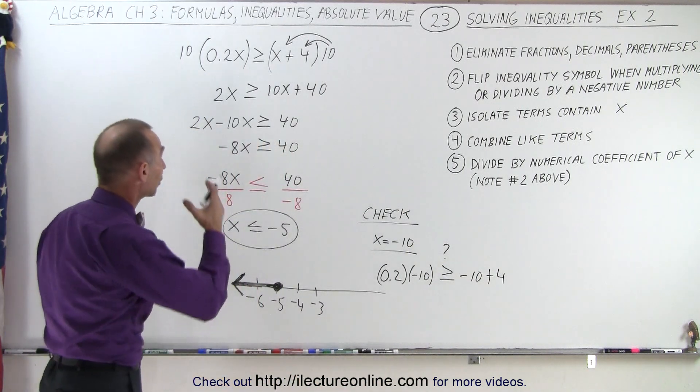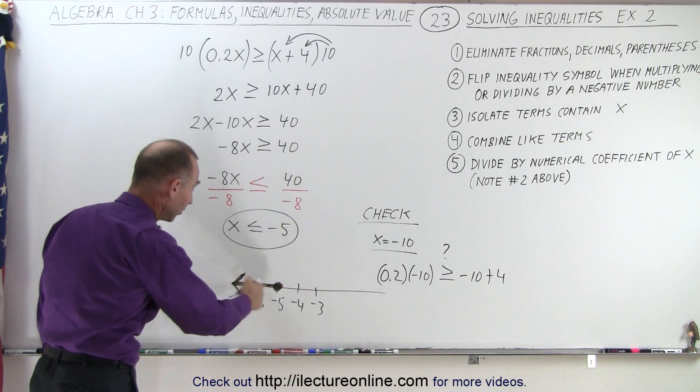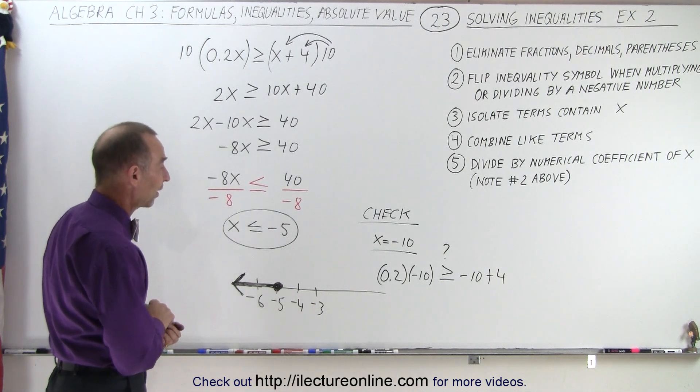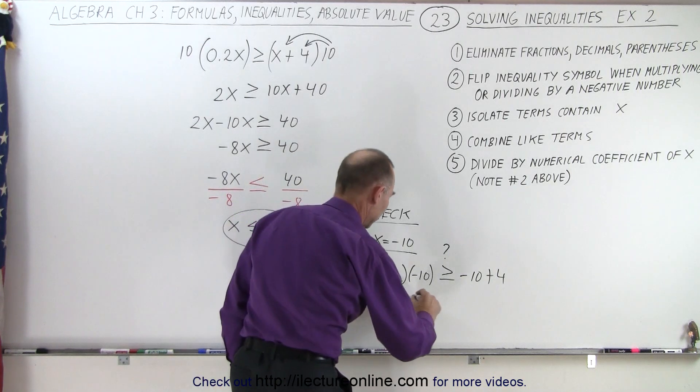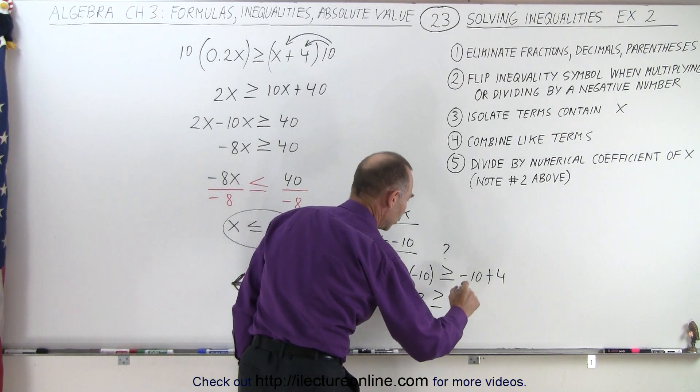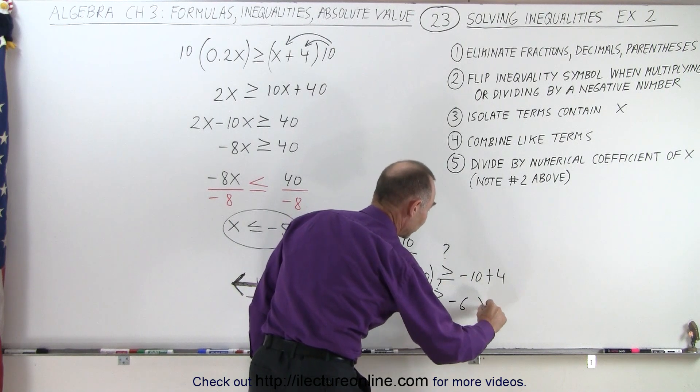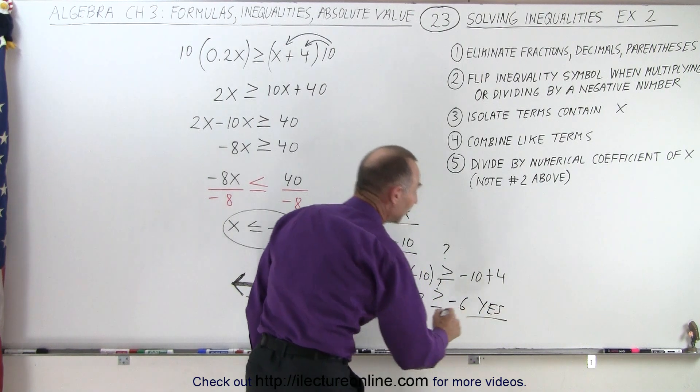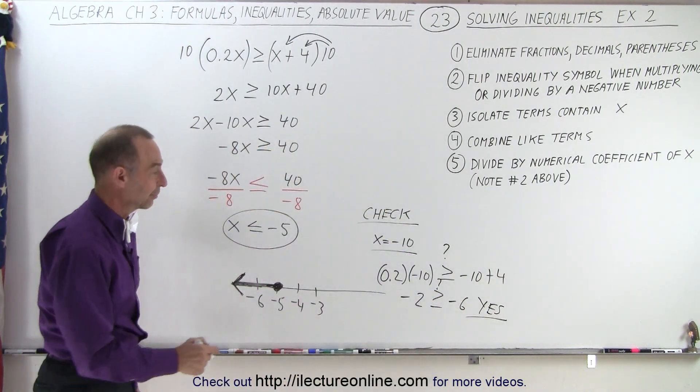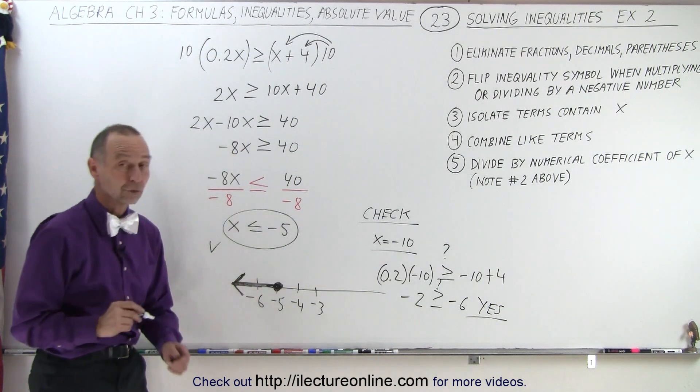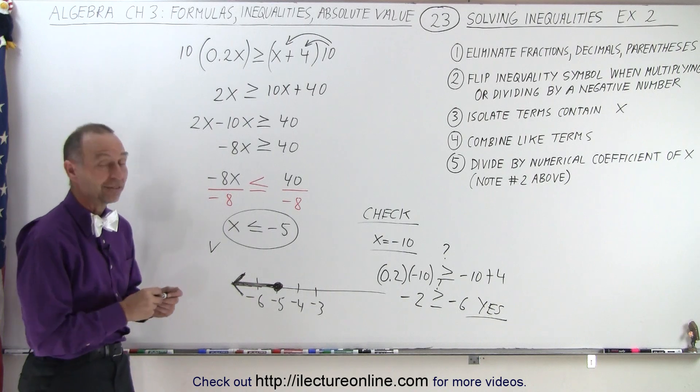Well, we've taken the original inequality and substituted one of the values that's in the range that supposedly solves or satisfies that inequality. So we end up with negative 2. Is that greater than or equal to negative 10 plus 4, which is negative 6, question mark? And the answer is yes. Negative 2 is larger than negative 6. Therefore, it satisfies the inequality. And therefore, we can say that the solution is correct. And that's how it's done.